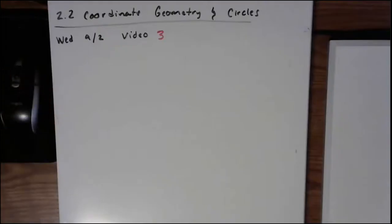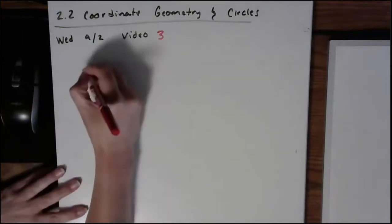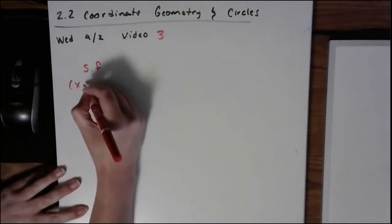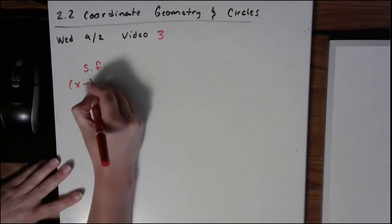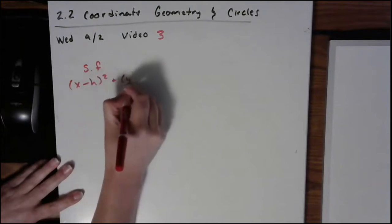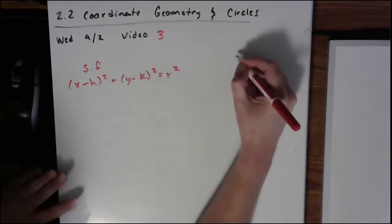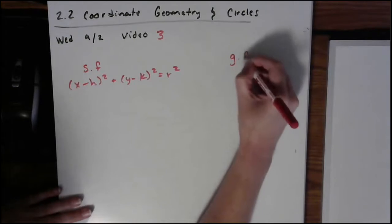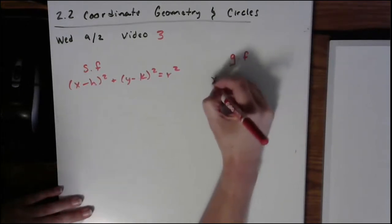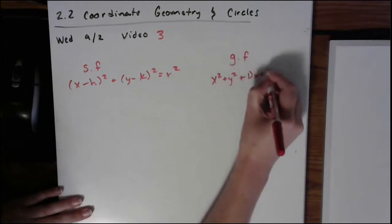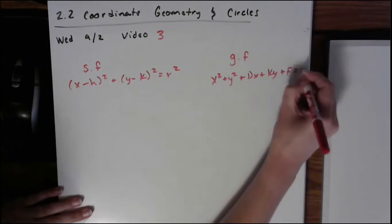Okay, welcome back to our third and final video for our discussion on circles from section 2.2. So we now know that we have the standard form, which looks like (x - h)² + (y - k)² = r². And we also have the general form, which is x² + y² + dx + ky + f = 0.